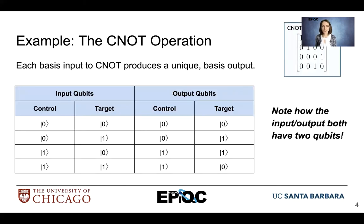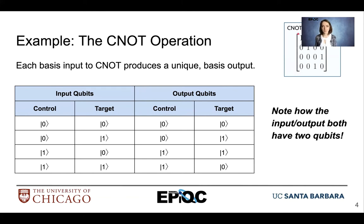Let's look at an example with the C0 operation. Each basis that we have for C0 — ket 0,0 / ket 0,1 / ket 1,0 / ket 1,1 — they all produce a unique basis output. We also want to note how each input and output has two qubits associated with it. As a review, how do we get this information on the truth table? We can take the vector representation of our input values and multiply that with the C0 matrix.